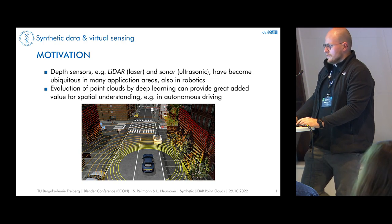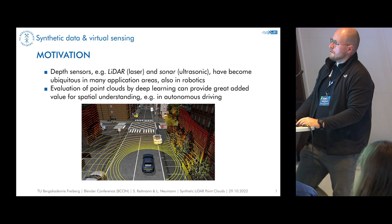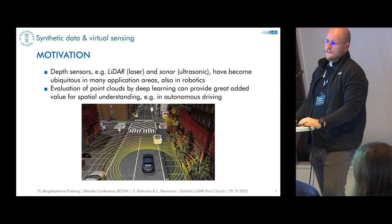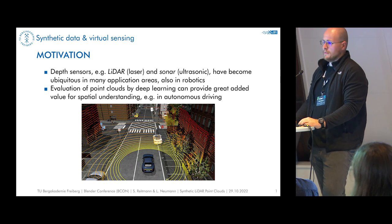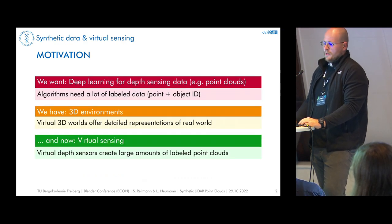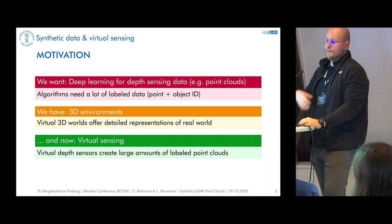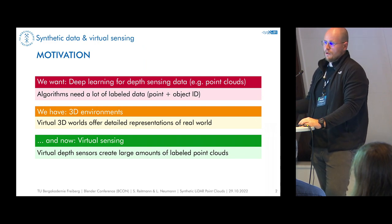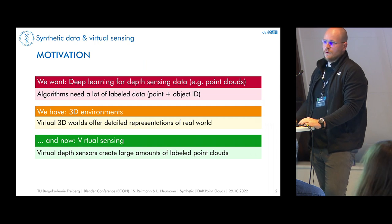Lidar is a laser-based system. We also have sonar systems working with ultrasonic waves, used for water bodies for example. What we want to do is find certain object classes in the point clouds we receive from this depth sensing data. The problem, as always in AI, is a lack of data. We need a lot of training data. So the pipeline is: we want to train deep learning models with labeled point cloud data as input. We have 3D environments in Blender and a mesh representation of the real world, and we implement virtual depth sensing sensors — for example lidar systems — to create point clouds and use them as input data for our AI models.